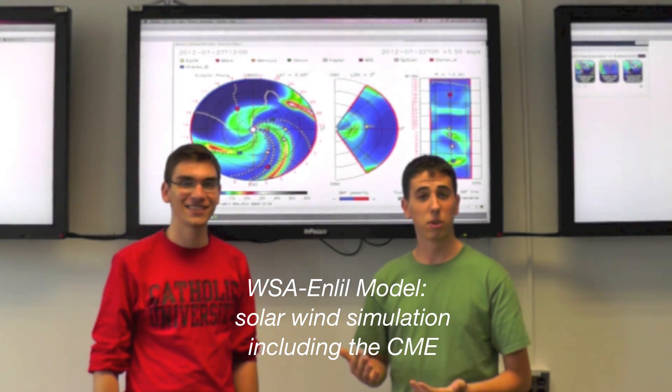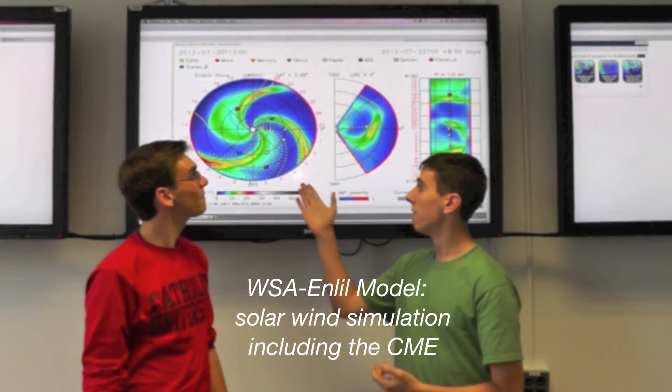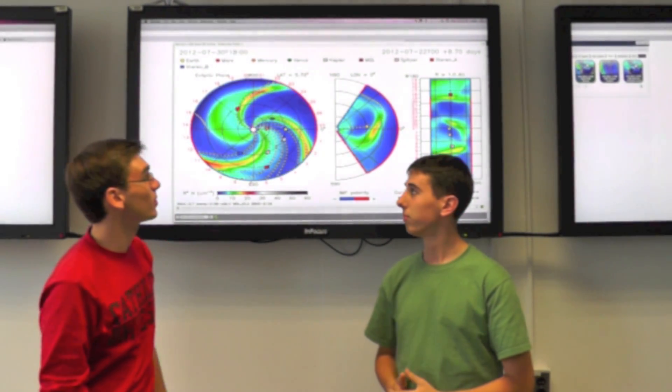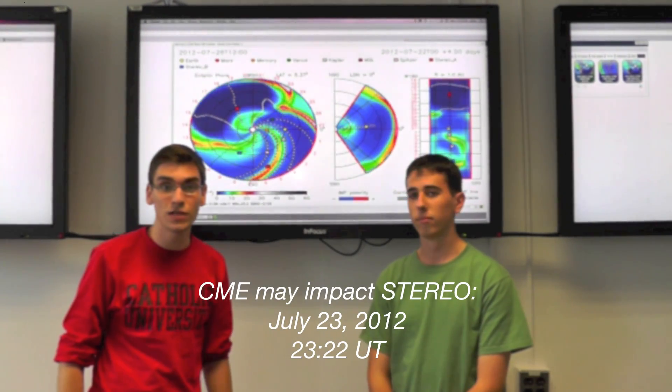Part of our job as summer interns is to analyze these events in real time. Here we have a movie showing the CME's propagation through the solar system using a computer-based research model. This particular CME may impact Stereo-A at 2300 UT.